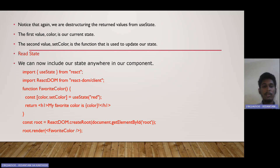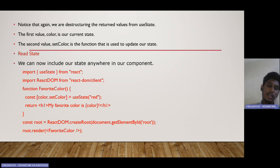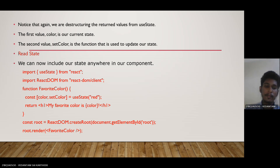After this, we need to read the state. We can now include the state anywhere in our component. In this function, we have set the useState with the initial value of red color, as we can see. In the return statement, we wrote that my favorite color is the color, where this color will be red. We have rendered it into our root component, so this will set the favorite color to red.